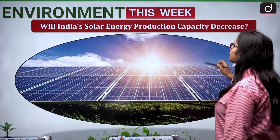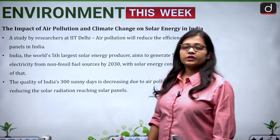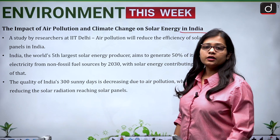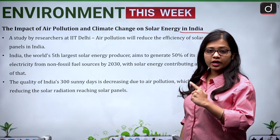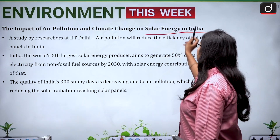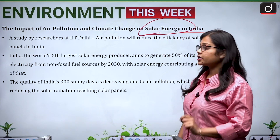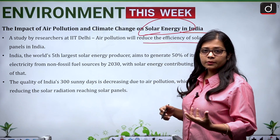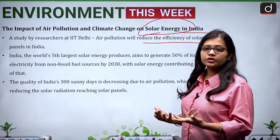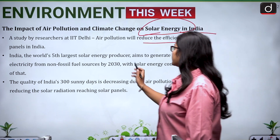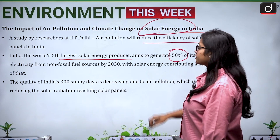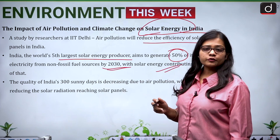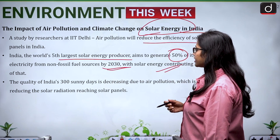The third topic is: will India's solar energy production capacity decrease? A recent study by IIT Delhi found that air pollution will reduce the efficiency of solar panels in India. India, the world's fifth largest solar energy producer, aims to generate 50 percent of its electricity from non-fossil fuel sources by 2030, with solar energy contributing a significant portion. The quality of India's 300 sunny days is decreasing due to air pollution, which is reducing the solar radiation reaching solar panels.